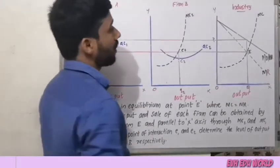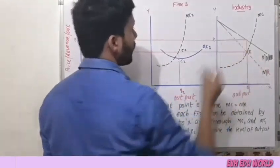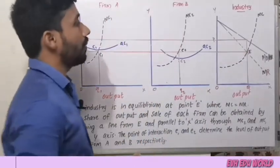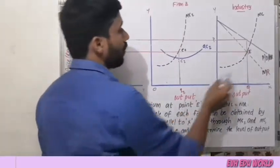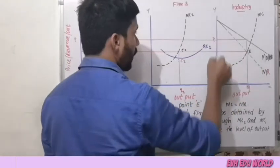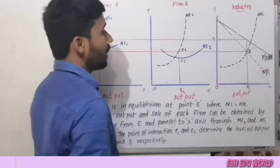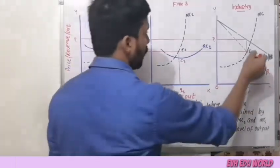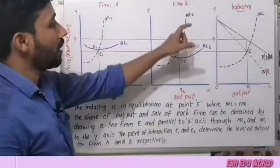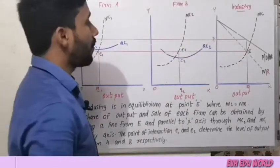The marginal cost equals marginal revenue at the equilibrium point. In the industry, the equilibrium point is E. The price is OP and the equilibrium quantity is OQ.